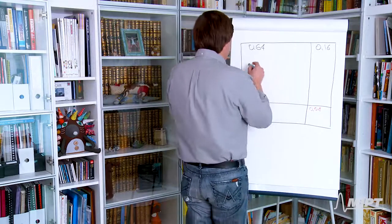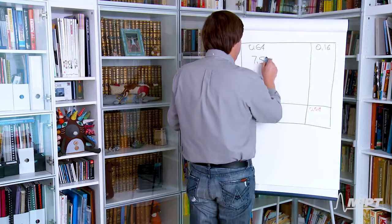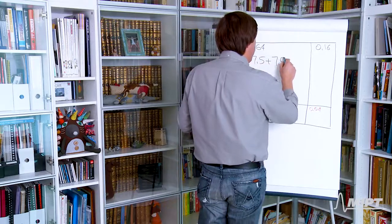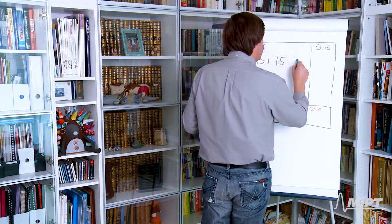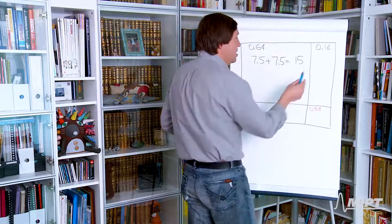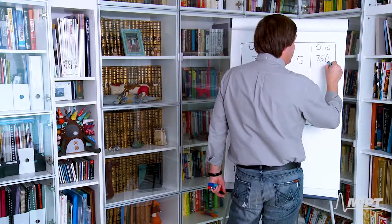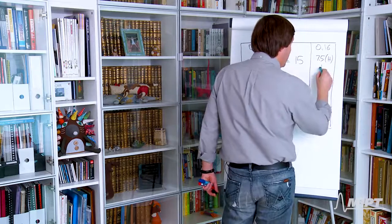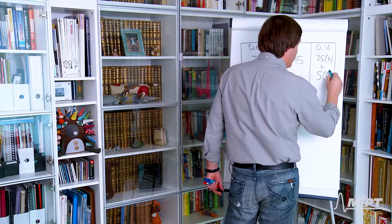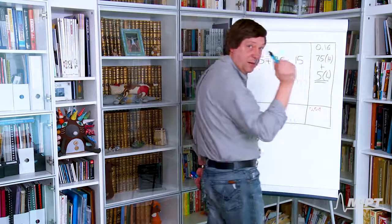So in this case we have 7.5 plus 7.5, so the bank pockets 15 million dollars. Now here we have 7.5, this is from the project with the high state, plus 5, this is from the project with the low state, because we monitor. That's the key story.